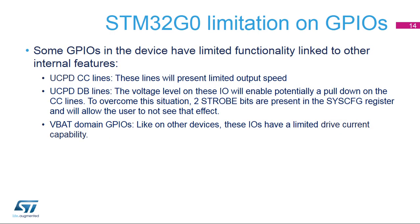VBAT domain GPIOs PC13, PC14, and PC15 are supplied through the power switch. Since the switch only sinks a limited amount of current of 3 milliamps, the use of GPIOs PC13 to PC15 in output mode is limited. The speed should not exceed 2 megahertz with a maximum load of 30 picofarad. These GPIOs must not be used as current sources, for example to drive an LED.